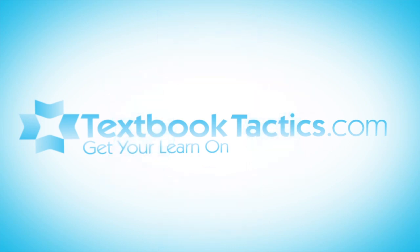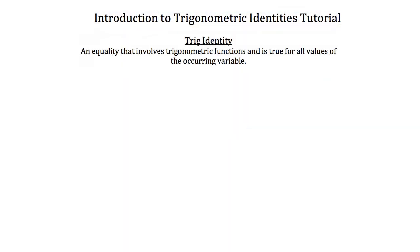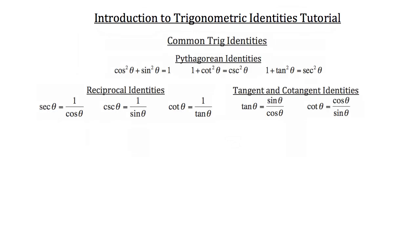This is the introduction to trigonometric identities tutorial. A trigonometric identity is an equality that involves trigonometric functions and is true for all values of the occurring variable. Trig identities are one of those things in math where it's just easiest to show you the work and explain it to you that way.